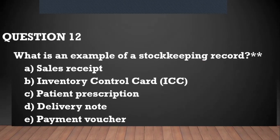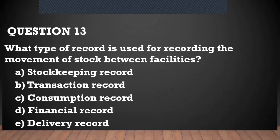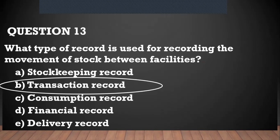Stock keeping records include inventory control cards, bin cards, and so on. Question number thirteen: what type of record is used for recording the movement of stock between facilities? When you have a movement that is like a transaction, what you need is a transaction record — like the transferring and returning commodities voucher.